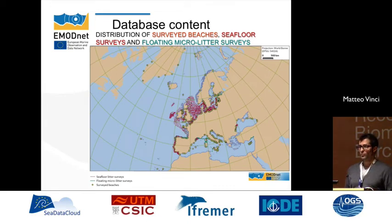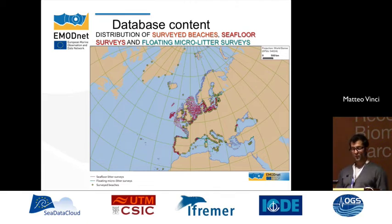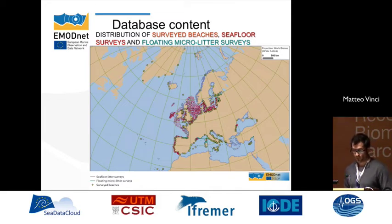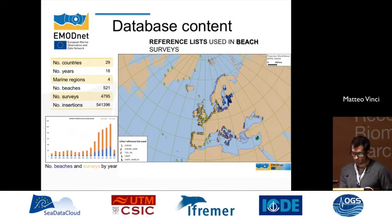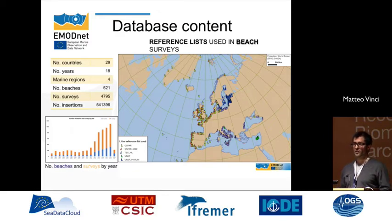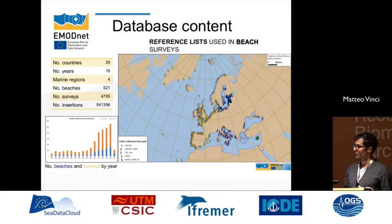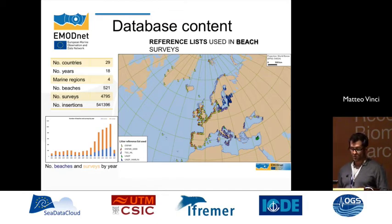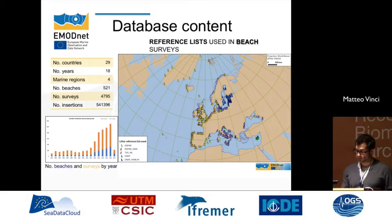Here we have an image showing the distribution of surveyed beaches, sea floor surveys, and floating micro litter surveys. The color legend shows green dots for surveyed beaches, the green line for micro litter surveys, and the red line for sea floor surveys. The beach dataset covers 29 countries, 18 years, 4 marine regions, more than 500 beaches, more than 4,000 surveys, and more than 540,000 insertions of litter items.